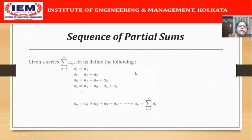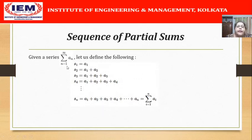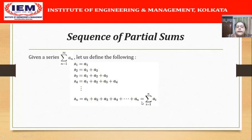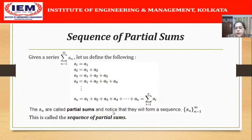Suppose we are given a series summation a_n from n=1 to infinity. We define: S_1 = a_1, the first term; S_2 = a_1 + a_2, the sum of the first two terms; S_3 = a_1 + a_2 + a_3. Similarly, S_n = a_1 + a_2 + dots + a_n, the sum of the first n terms of the series. This S_n is called a partial sum. The terms S_1, S_2, S_3, S_n written one by one generate a sequence denoted as {S_n} from n=1 to infinity, which is called the sequence of partial sums.